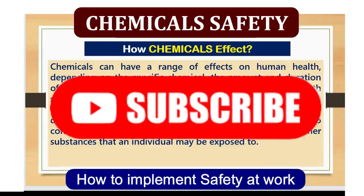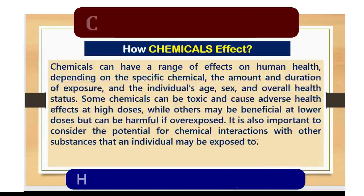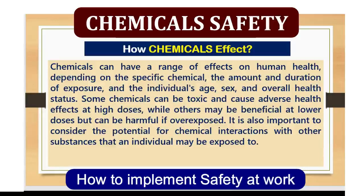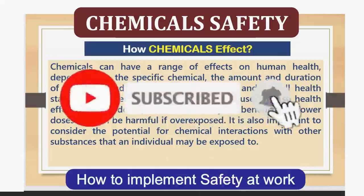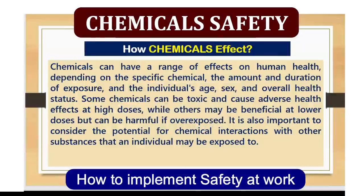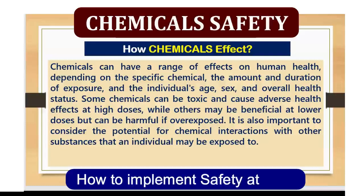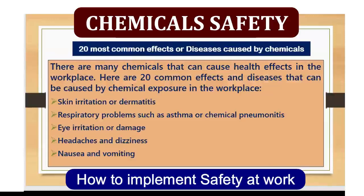First, we'll see how chemicals affect us. Chemicals can have a range of effects on human health, depending on the specific chemical, the amount and duration of exposure, and the individual's age, sex, and overall health status. Some chemicals can be toxic and cause adverse health effects at high doses, while others may be beneficial at lower doses but can be harmful if overexposed. It is also important to consider the potential for chemical interactions with other substances that an individual may be exposed to. In this training session, I'll highlight 20 of the most common effects or diseases caused by chemicals in the workplace.